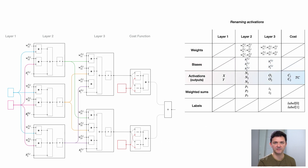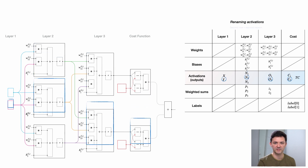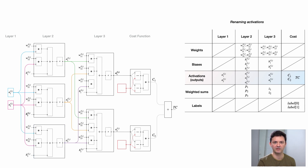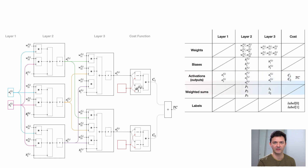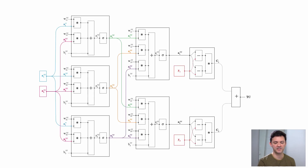Let's now rename our activations. Elements in the first row belong to the first neuron of their respective layer, second row to the second neuron, and third row to the third neuron. We use the small letter A with a number indicating which neuron and a symbol indicating which layer. So A1 of L3 means the activation of the first neuron belonging in the third layer. Weighted sums are named the same way using the symbol Z. Labels are renamed to Y1 and Y2. This is the same neural network, just with all elements renamed consistently.